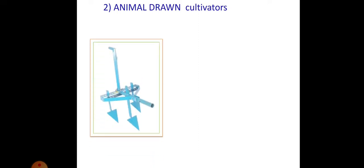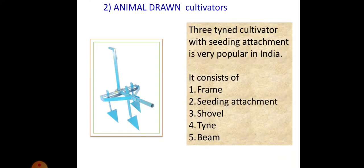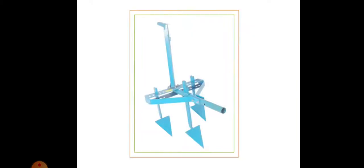The animal-drawn cultivator has fewer tines because less power is available. A three tine cultivator with seeding attachment is very popular in India. It consists of a frame, seeding attachment, shovel, tines, and beam. This is a sowing or seeding type cultivator.